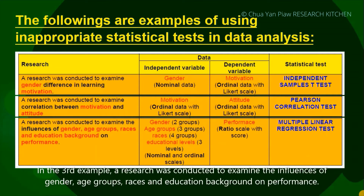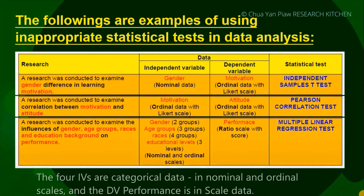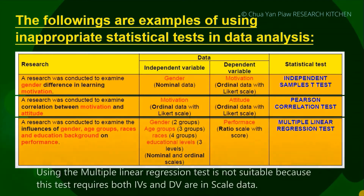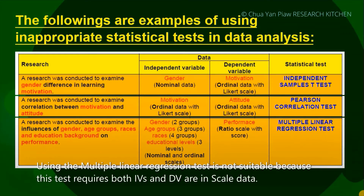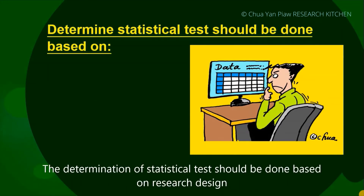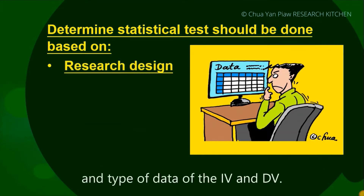In the third example, a research was conducted to examine the influence of gender, age group, race, and education background on performance. The four independent variables are categorical data in nominal and ordinal scales, and the dependent variable performance is in scale data. Using the multiple linear regression test is not suitable because the test requires both IVs and DVs to be scale data. The determination of the statistical test should be done based on research design and type of data of the IV and DVs.